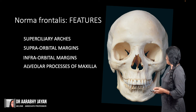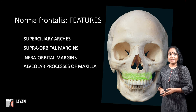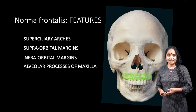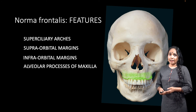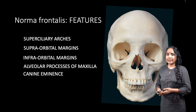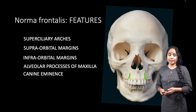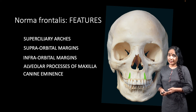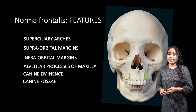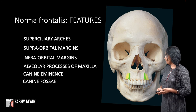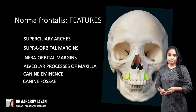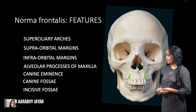Further down we have the alveolar processes of the maxillae which house our teeth, and among the maxillary alveolar processes we have certain landmarks. There is something called the canine eminence, which is a bulge or protuberance seen above the maxillary canines on either side. There are two depressions on either side of the canine eminences — the depression lateral to the canine eminences is called the canine fossa, and the depression medial to the canine eminences is called the incisive fossa.